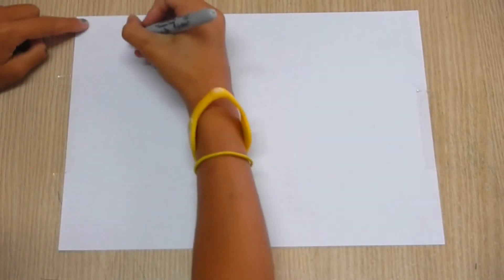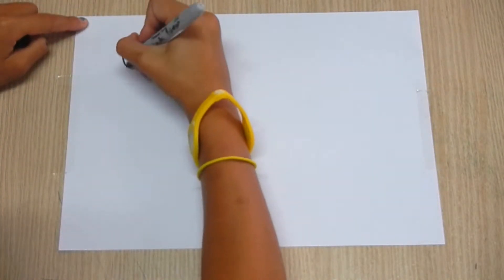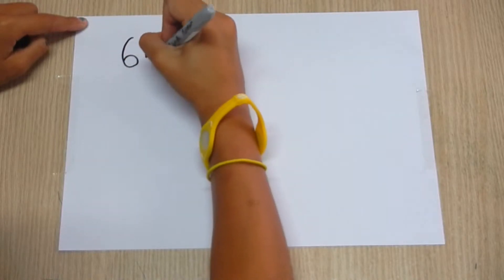How to add to subtract. For example, 65 take away 48.